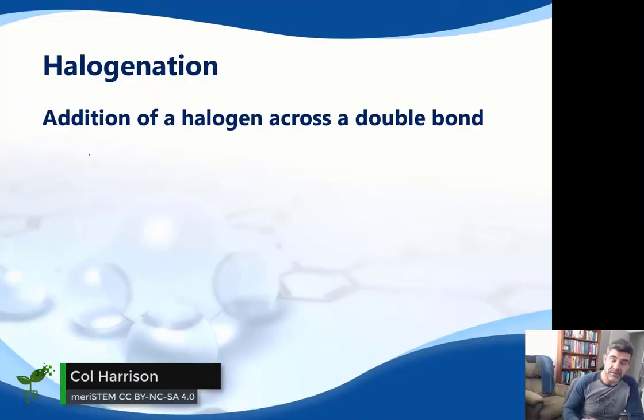A second addition reaction is called halogenation. As it sounds, let's start again with our ethene.